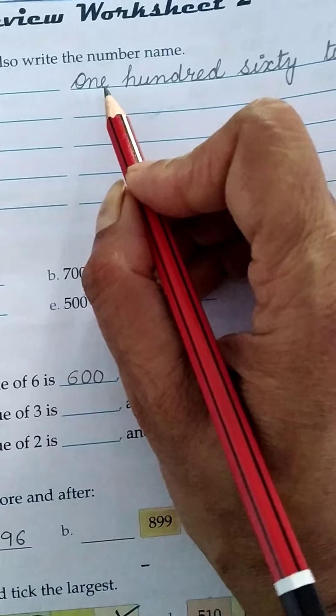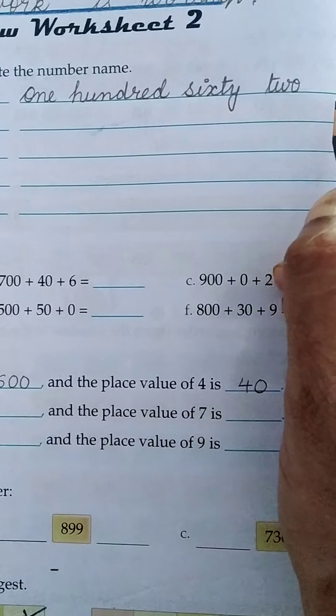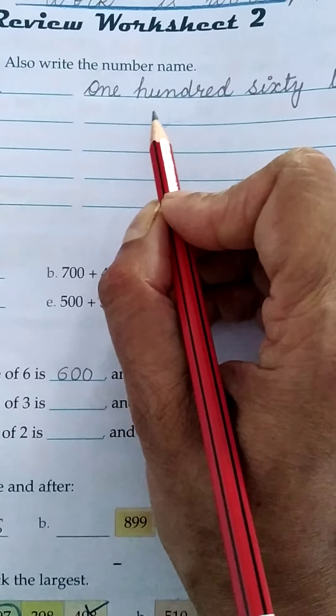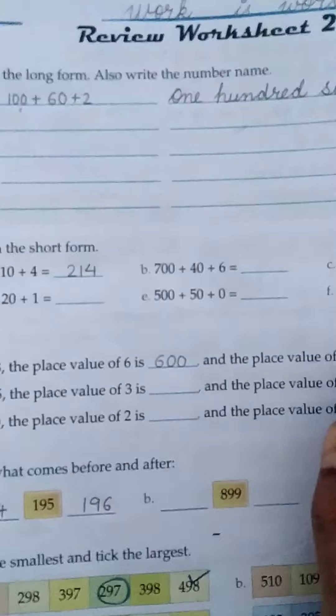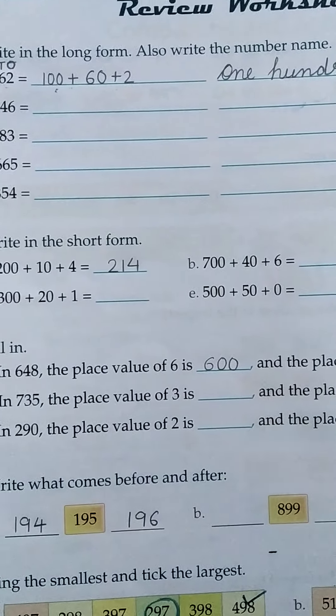Then you write the number name. 162. Students do your work very neatly. This is your test. You have to do this exercise by yourself.